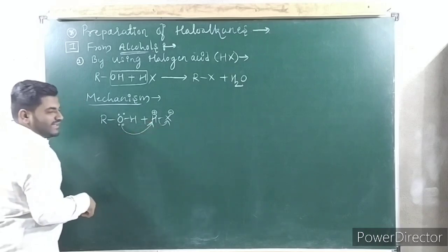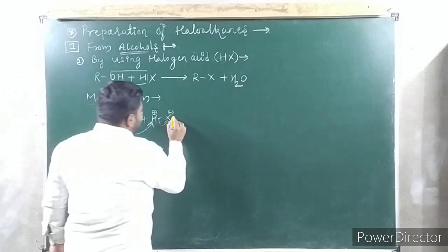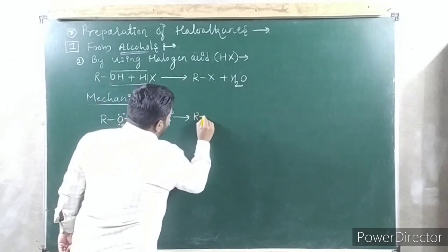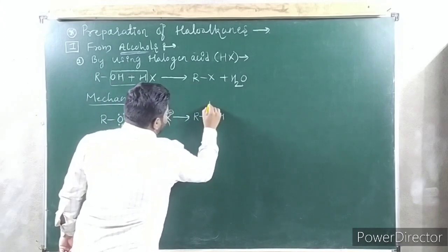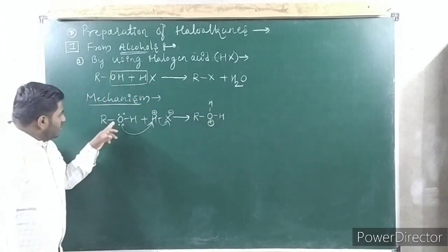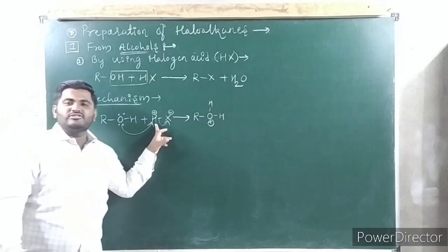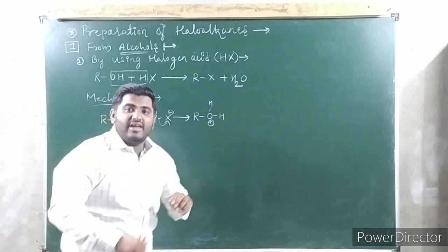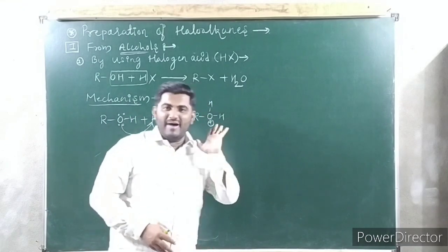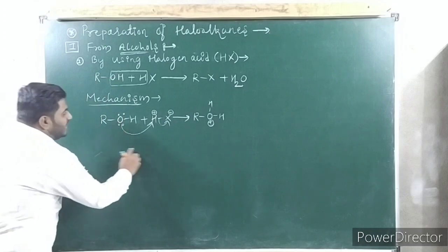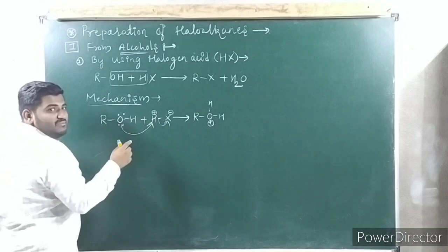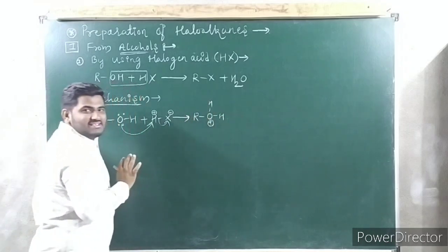These lone pairs attack on the hydrogen, so you are getting R–O⁺H₂. Oxygen has a plus charge because oxygen is donating its electron to hydrogen. One who donates electron gets plus, one who accepts gets minus. So oxygen has a plus sign, and hydrogen is neutral here.